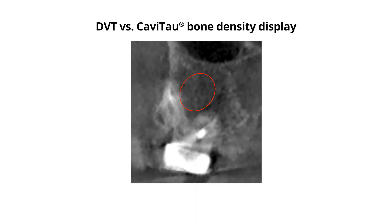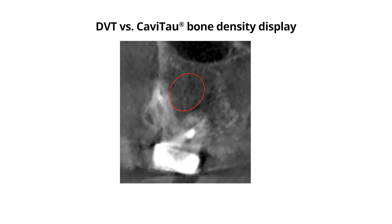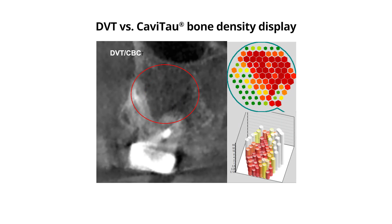Image 3 shows the root-filled tooth 1-8 in the DVT with no evidence of inflammation. In contrast, the right-hand portion of the image shows the measurement with cavital in red, suggesting fatty degenerative osteonecrosis in jawbone — FDOJ. The cavital displays the hard substances of the two roots in white, and between them are clear osteolysis in red.